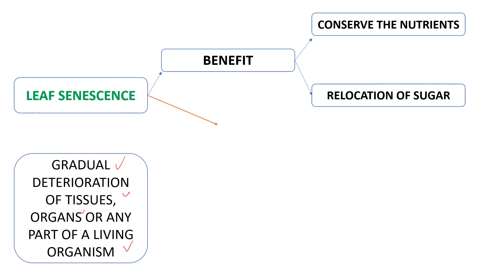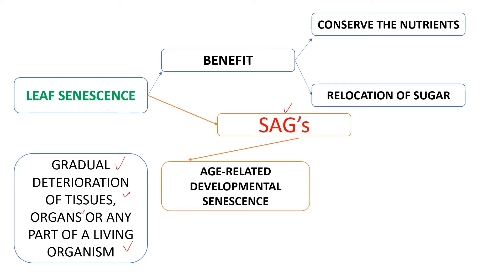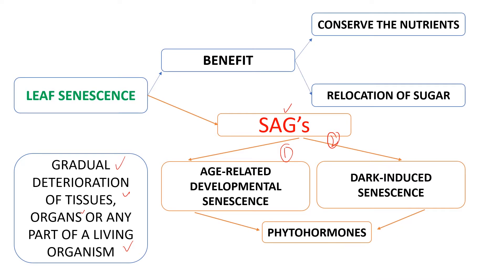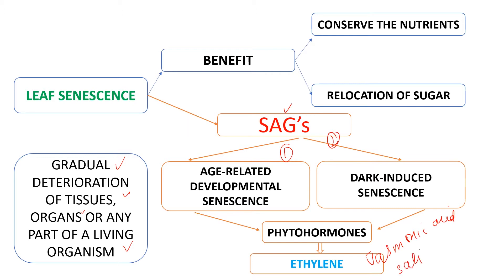The main genes involved in leaf senescence are called SAGs — Senescence Associated Genes. There are two types of mechanisms involved: first is age-related developmental senescence, and the second is dark-induced senescence, also called environmentally controlled senescence. Both types are dependent upon plant growth regulators, also called phytohormones. The primary hormone involved in leaf senescence is ethylene, while an antagonist role is played by cytokinin. Other hormones involved include jasmonic acid and salicylic acid.